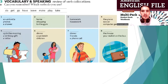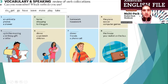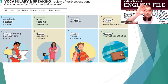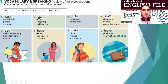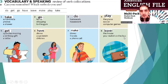In the next part — can you remember which verbs you use? Do, get, go, have, leave, make, play, take. Do this one with your partner. Stop the video and do it. Let's check it: take an umbrella, take photos, take a shower; go home, go shopping, go to the gym; do homework, do housework; play the piano, play soccer, play computer games; get up in the morning, get a birthday gift, get a letter; have dinner, have a sandwich, have children; make dinner, make friends, make a phone call; leave the house, leave your wallet on the bus.